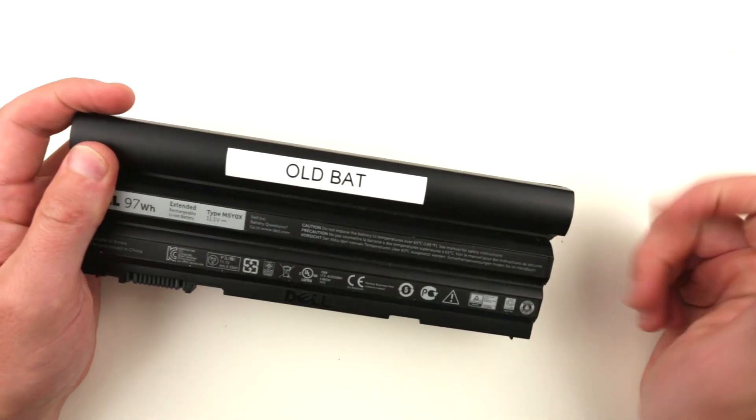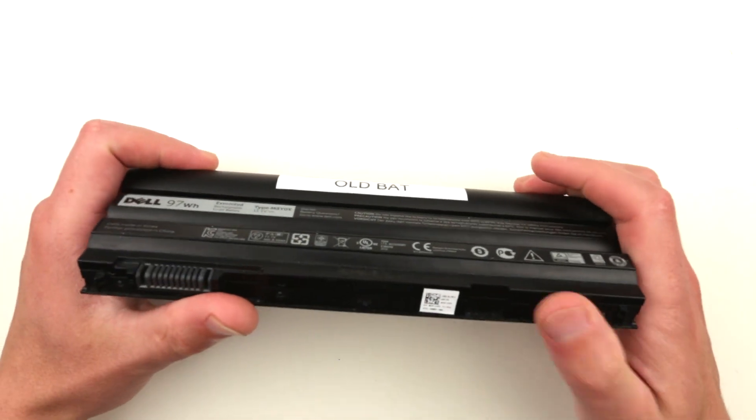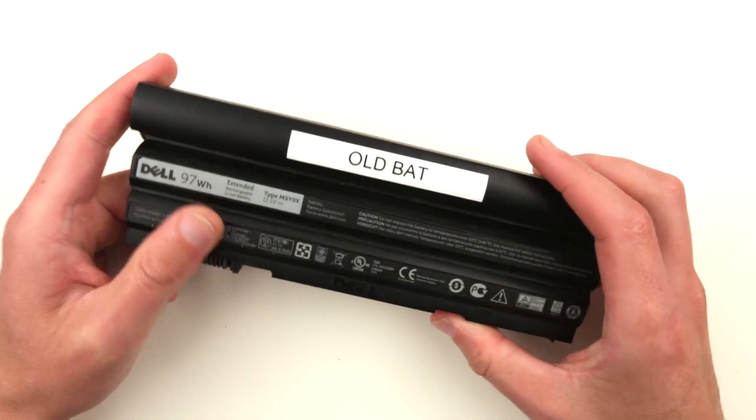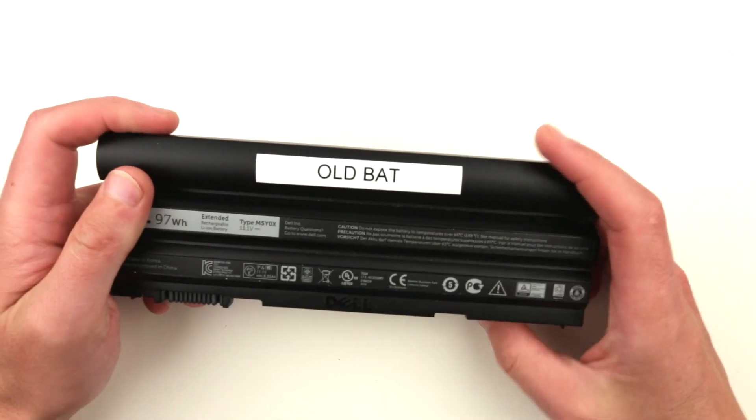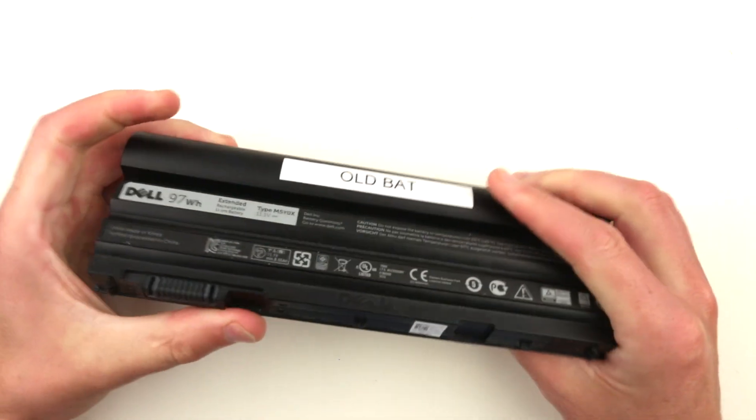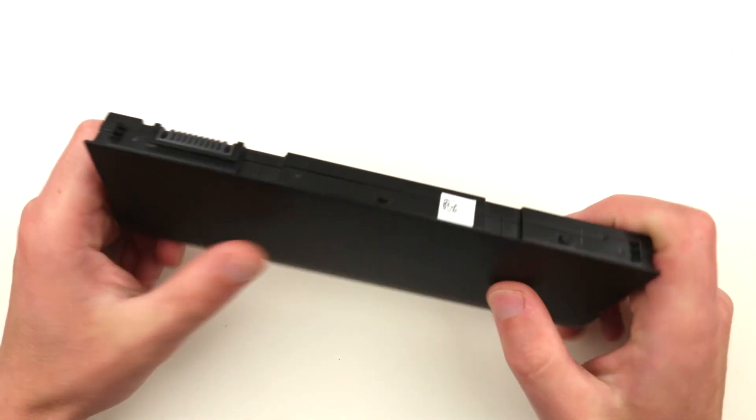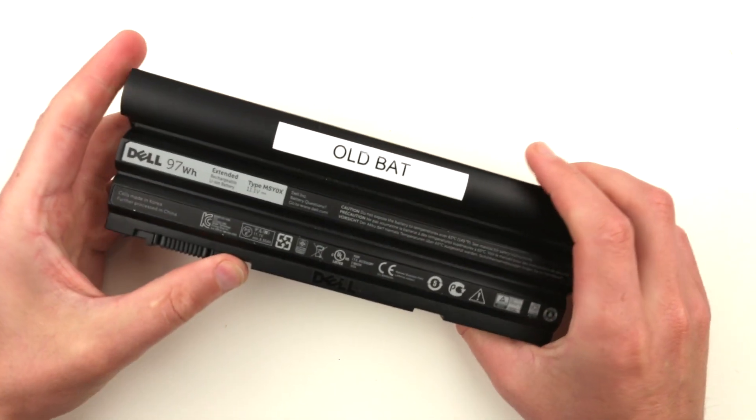When you unplug the power cord from the laptop, it shuts down immediately. It doesn't even pull anything from the battery. What I'd like to do is open this battery up and take a look at what's inside to see if I can actually fix it, maybe replace whatever elements are there.